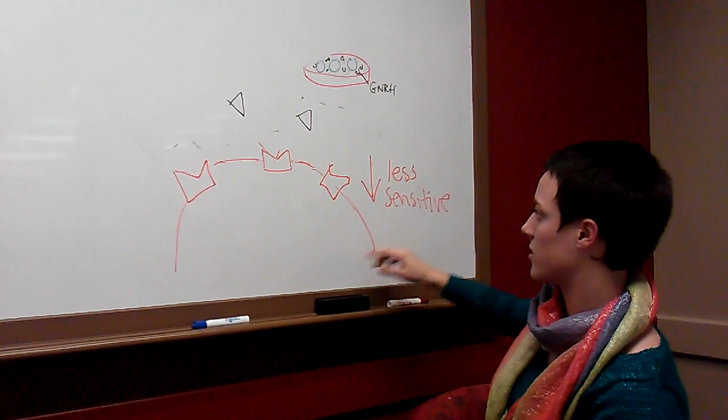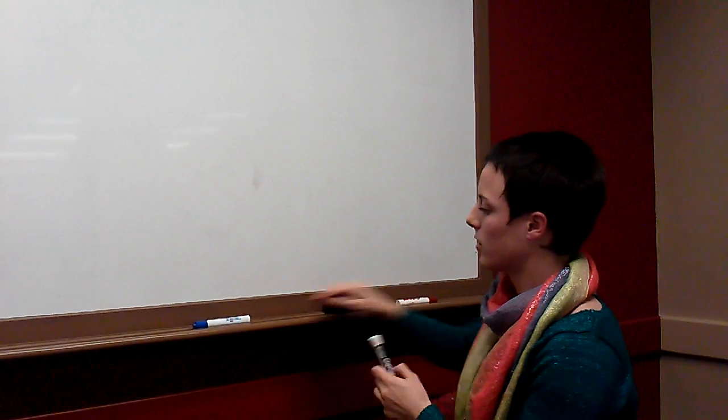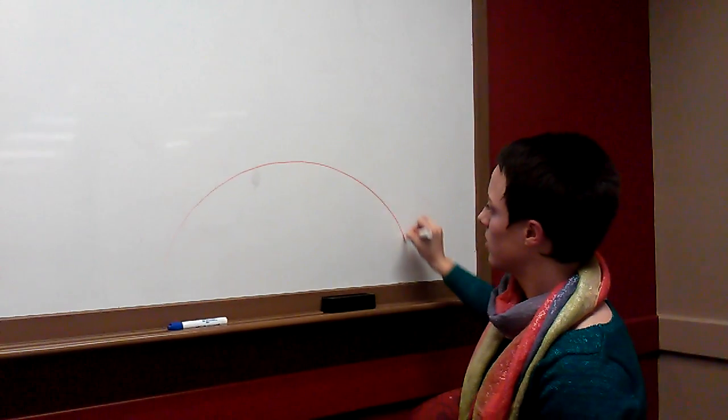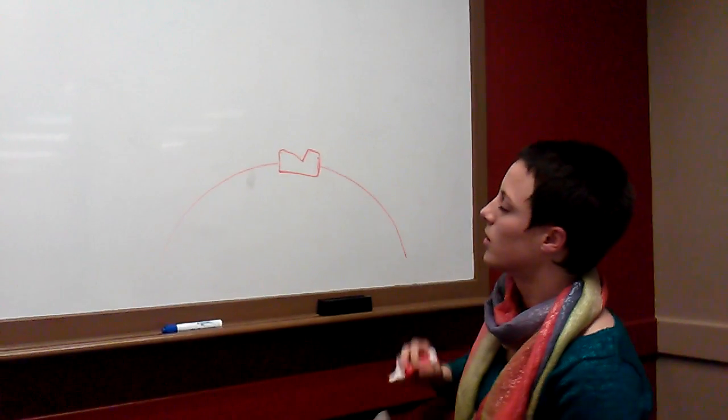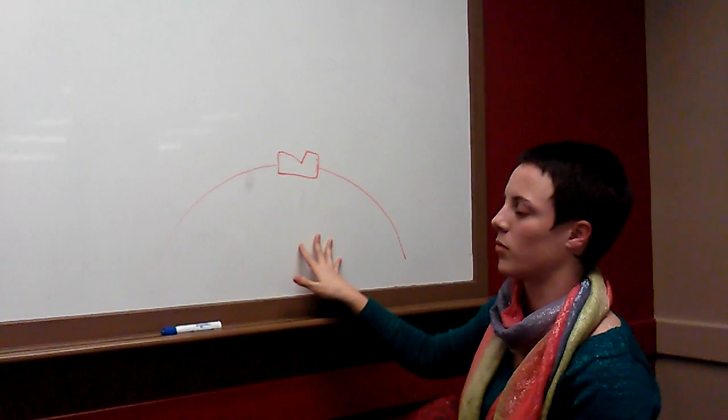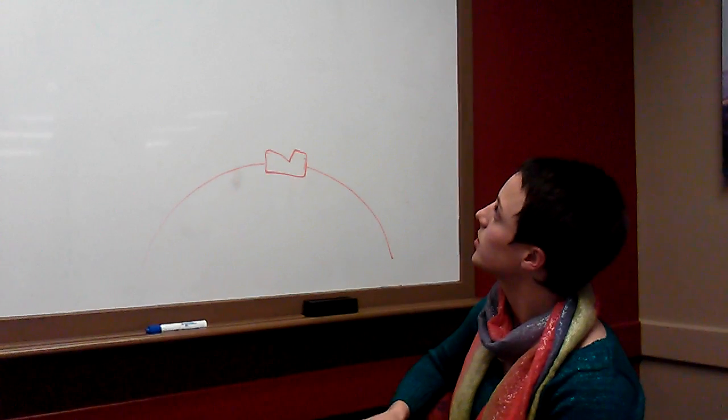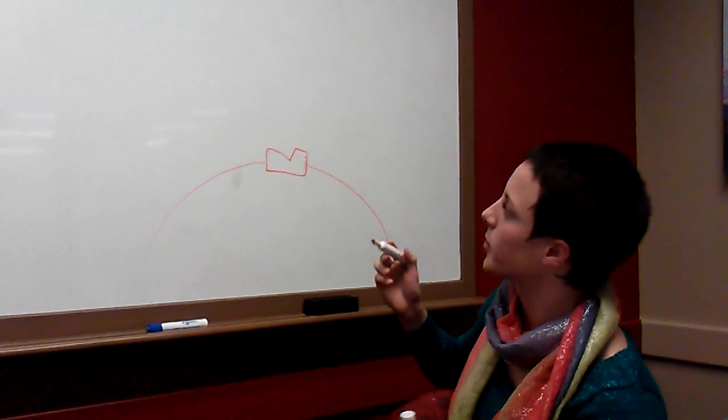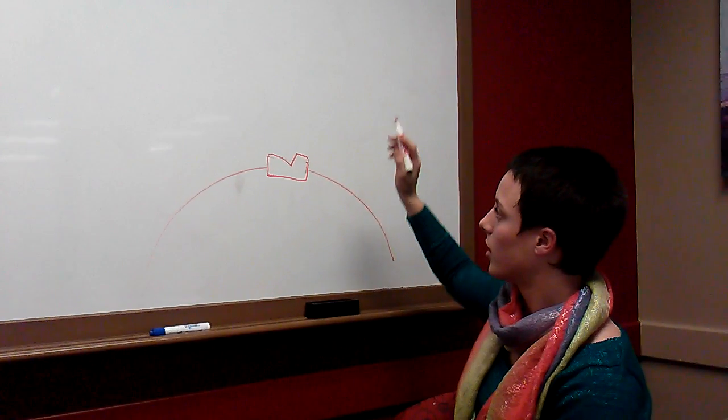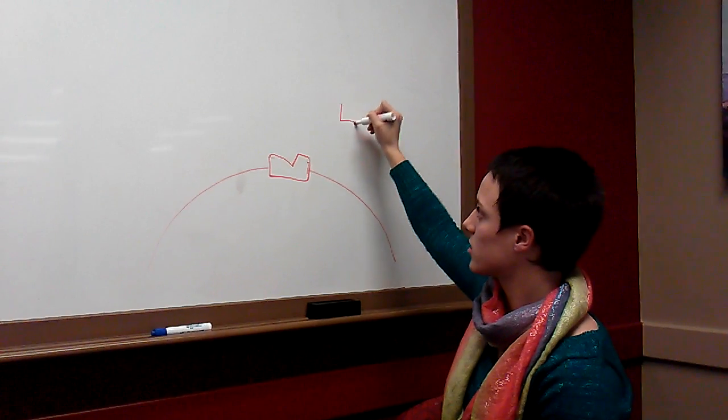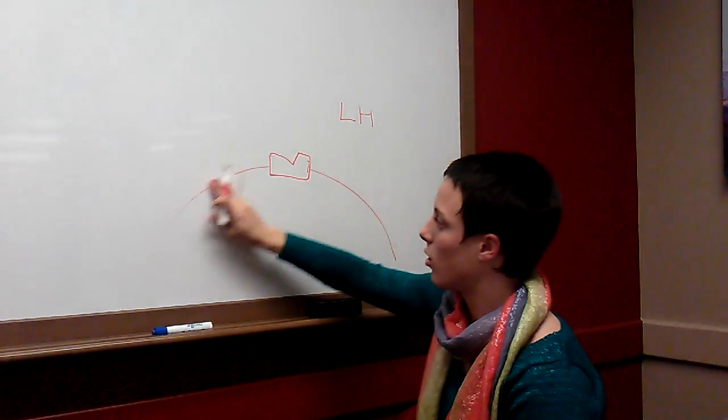So now let's move on to upregulation. That's downregulation when they become less sensitive. So upregulation is the opposite. Upregulation is when the cell normally has maybe one receptor. And let's call this the ovary because this is the most applicable circumstance. Let's say this is the ovary. You're 11 years old, young girl.